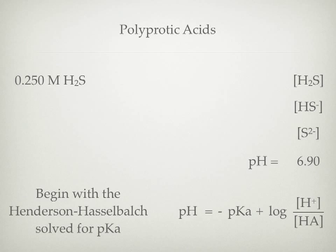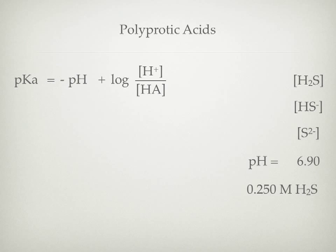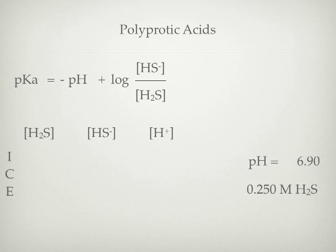Here's the general form. We'll go ahead and move it up there and switch those two around. Now we're going to replace the H⁺ and the HA of the general form. For the first deprotonation, the HA is going to be H₂S, and the A⁻ is going to be HS⁻. That just flows from the first equation. Now we're going to have to express those symbolically, and what will help us do that is an ICE table, which we'll set up.